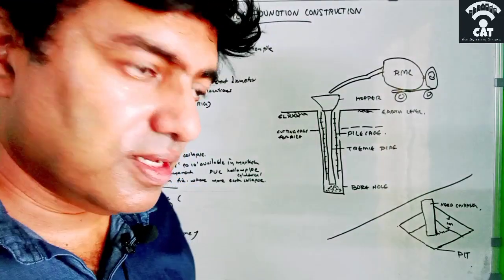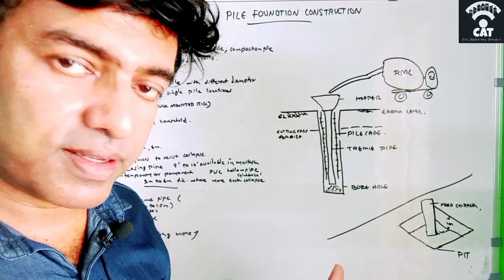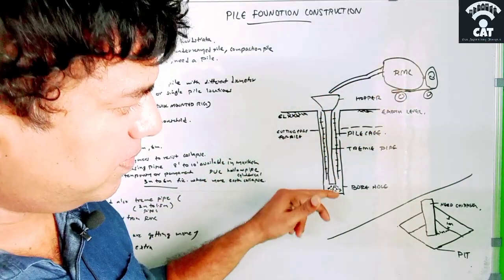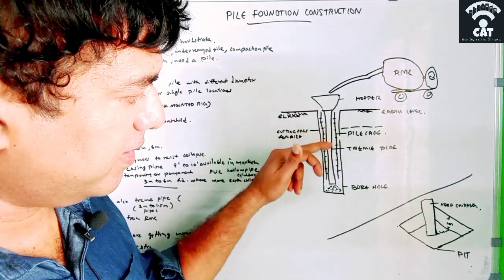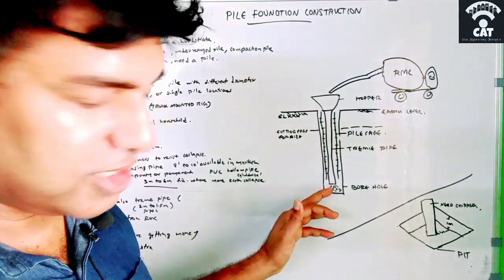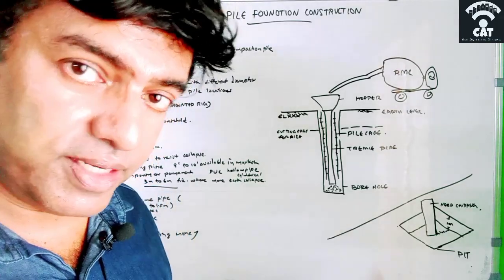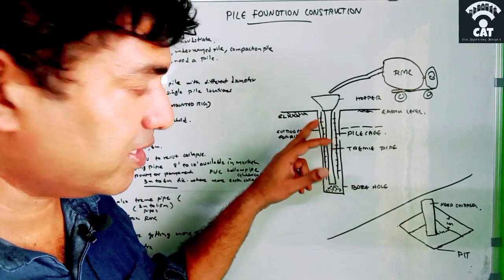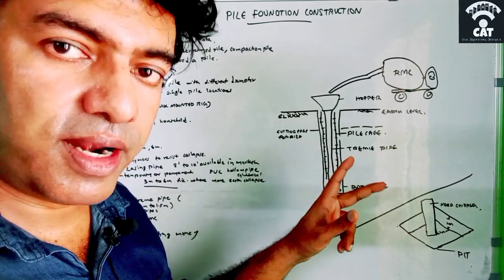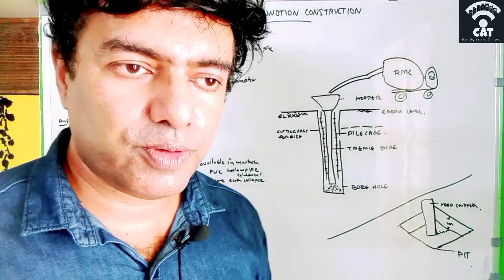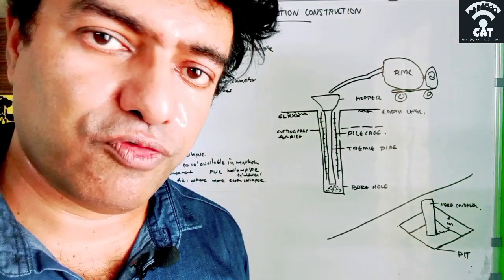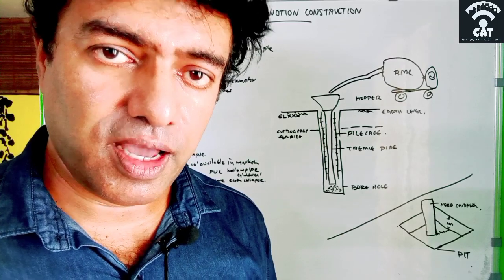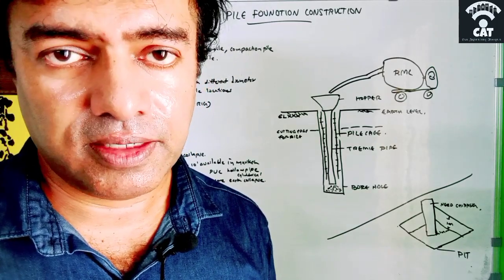One more thing: the cost of pile work — covering boring the hole, placing the cage, and pouring the concrete — is measured in running meters. We give the cost according to running meters, and the reinforcement cage cost is extra and added to this running cost. I hope you now understand the procedure of pile foundation work. I will come back with a new video on another subject. Till then, goodbye — please subscribe, share, and like my channel. Thank you very much.